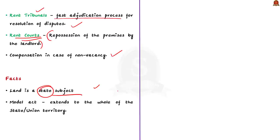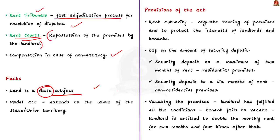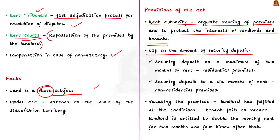The Model Tenancy Act talks about establishing a rent authority to regulate the renting of premises and to protect the interests of landlords and tenants. This proposed authority will also provide a speedy adjudication mechanism for resolution of disputes. The Act also puts a cap on the security deposit, fixing it to a maximum of two months' rent for residential premises and six months' rent for non-residential premises.